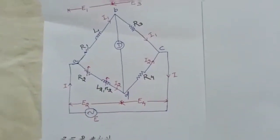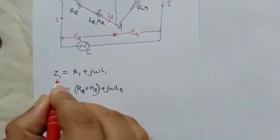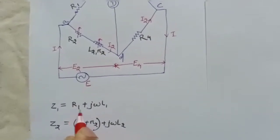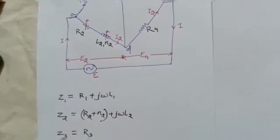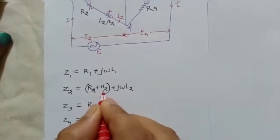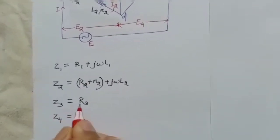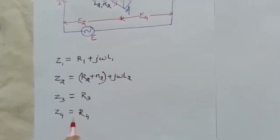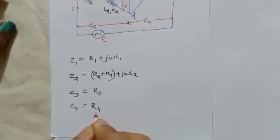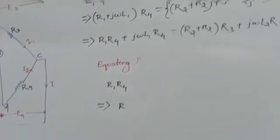Let's write down the equations for Z1, Z2, Z3, and Z4. Z1 is an RL circuit, so it should be R1 plus j·ω·L1. The value of Z2 is R2 plus r2 plus j·ω·L2. Z3 is equal to R3 — it is a simple resistive branch — and Z4 is equal to R4, also a simple resistive branch.